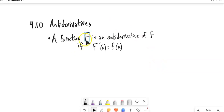So basically, a function, we'll call it capital F, is the antiderivative of f if the derivative of capital F is f. So in other words, this direction is deriving. This direction is, we'll call it antideriving.